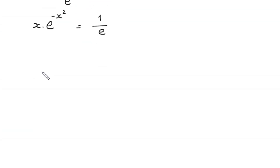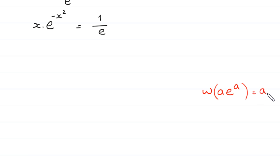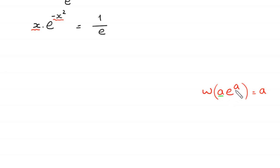Now, we want to use the Lambert W function, where W of a times e to the power a equals a. To use the Lambert W function, we must have the same expression in both places — the same expression a and the same power of e, a. But here we have negative x squared in the exponent and x as the coefficient, so they don't match yet.